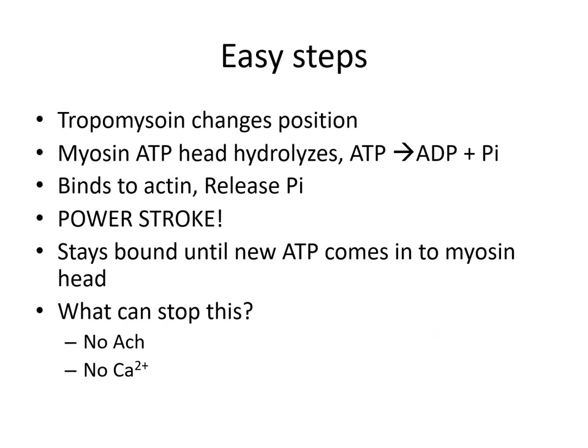To summarize the easy steps of contraction-relaxation cycling: tropomyosin changes position because calcium has bound to troponin. The myosin ATP head hydrolyzes — ATP becomes ADP plus phosphate — then binds to the actin, releases the phosphate, and performs a power stroke. It stays bound until a new ATP arrives at the myosin head. What stops this? Eliminating ACh or eliminating calcium stops the process of hydrolyzing ATP and performing power strokes.